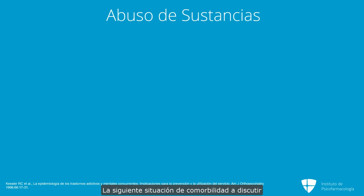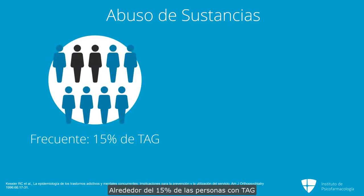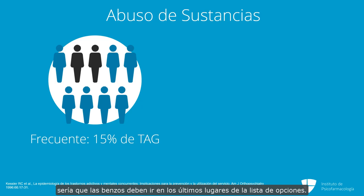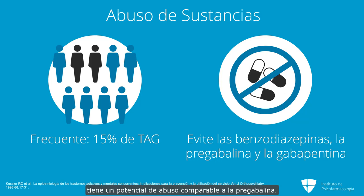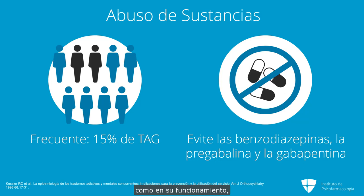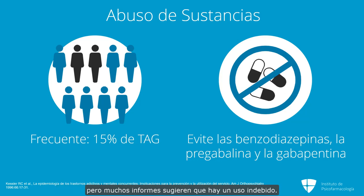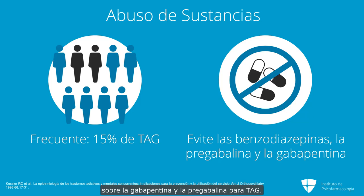The next comorbidity is active substance abuse, which is a pretty common comorbidity — about 15% of people with GAD are actively using some substance. Our recommendations would differ from standard: benzodiazepines drop way down on the options list. Pregabalin also drops way down because it is Schedule IV and prone to abuse. Gabapentin probably has comparable abuse potential to pregabalin — they are very similar compounds structurally, mechanistically, and in their indications. Gabapentin somehow avoided a Schedule IV label, but many reports suggest there is misuse. We'll discuss the evidence base on gabapentin and pregabalin for GAD further later.